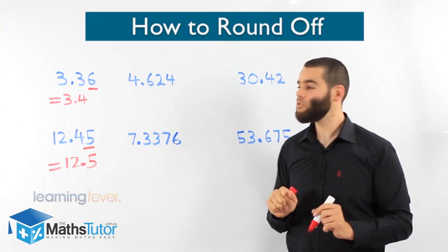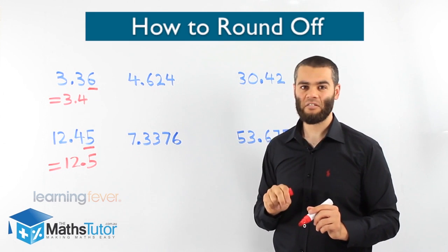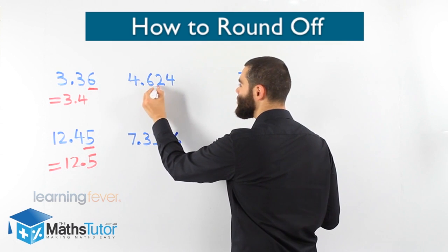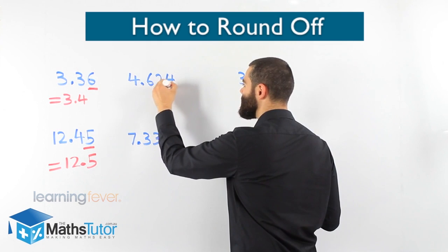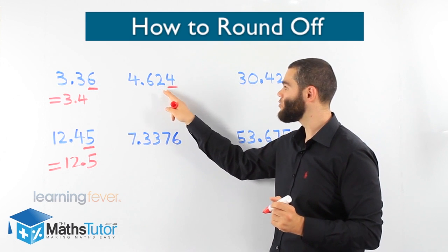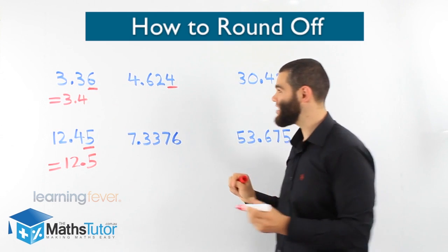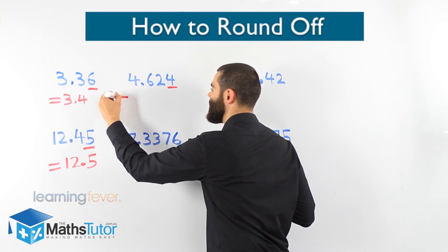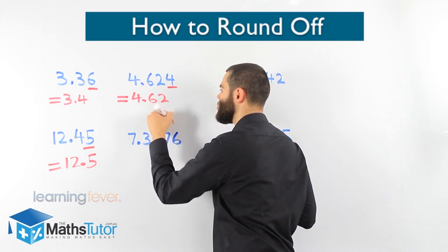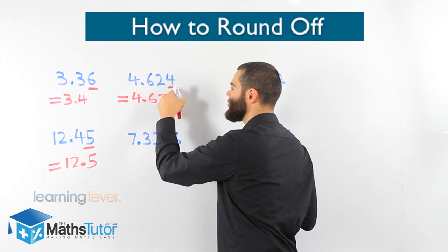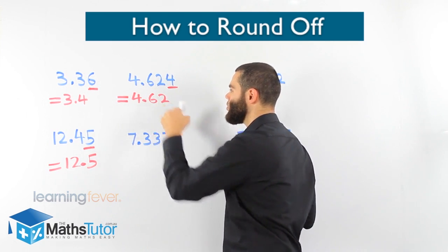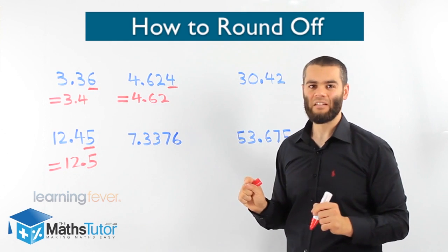Now we're going to round off to two decimal places. We have 4.624 — the two decimal places are the first two digits after the point. We look to the number on their right, which is the 4. Is it five or more? No — the 4 is less than five, so we can't round up; we have to round down. 4.624 rounded to two decimal places is 4.62.